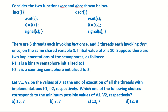Consider two functions: increment and decrement. The increment function waits on semaphore s, then sets x = x + 1, then signals s. The decrement function waits on s, decrements x, then signals s. Wait always decrements s by 1 and signal increments s by 1. There are 5 threads each invoking increment once and 3 threads each invoking decrement once on the same shared variable x. The initial value of x is 10.